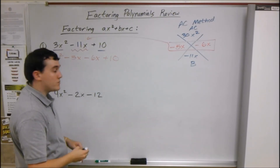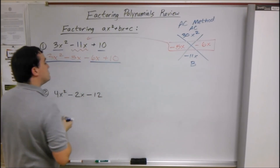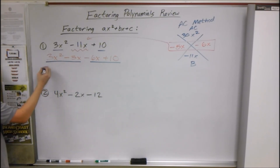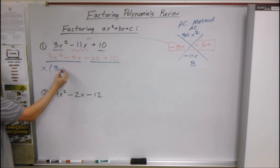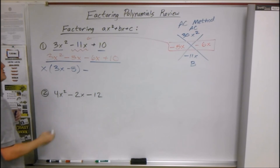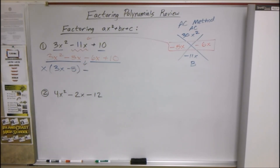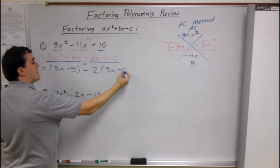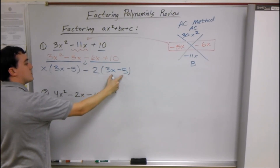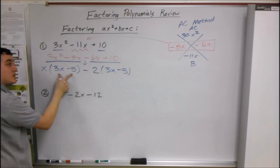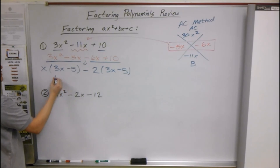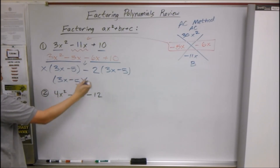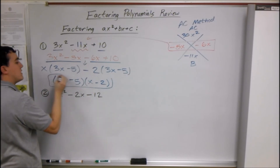Now we use factoring by grouping. Group the first two and group the last two, and take the greatest common factor out of each group. What can we take out of the first two? Just an x — so we have x(3x - 5). Minus — take a 2 out of the last two — and we have 2(3x - 5). If these two parentheses don't match you did something wrong. Everything on the inside goes in one parenthesis: (3x - 5), and everything on the outside: (x - 2) goes in the other. So our answer is (3x - 5)(x - 2).